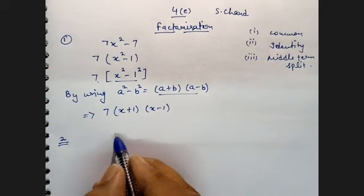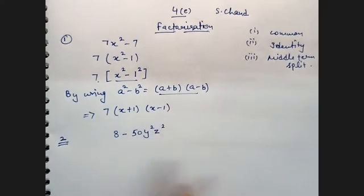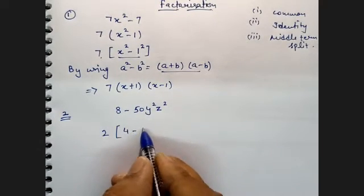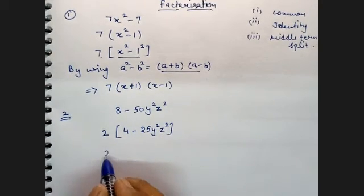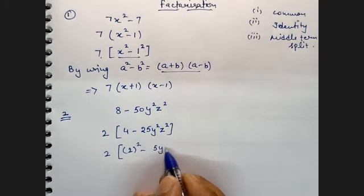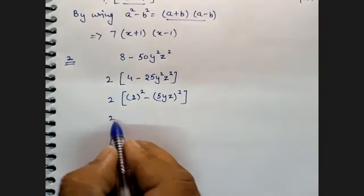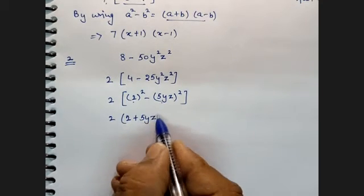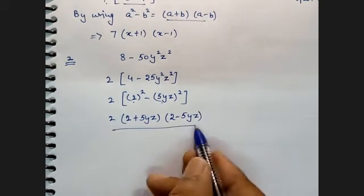Second sum: 8 minus 50Y squared Z squared. What is common here? 2 is common, giving 2 into 4 minus 25Y squared Z squared. Now 4 can be written as 2 squared, and 25Y squared Z squared can be written as 5YZ whole squared. Applying A squared minus B squared equals A plus B into A minus B, the answer follows.